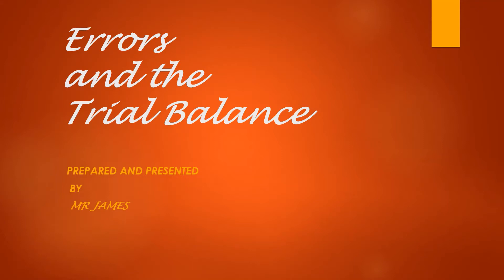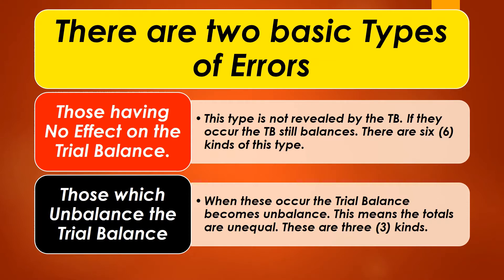Today's topic is errors and the trial balance, as presented by Mr. Jake. There are two basic types of errors: those having no effect on the trial balance, and those which unbalance the trial balance. The first type — those having no effect — means the trial balance still balances when they occur. There are six kinds of this type.